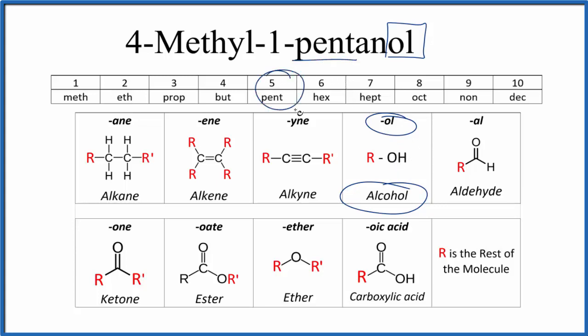Pent, that means five. So we're going to have a chain of five carbons, and one of those carbons will be bonded to an O-H group, to an alcohol group.